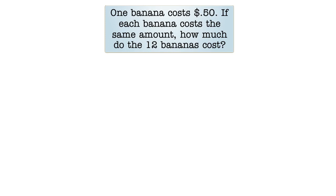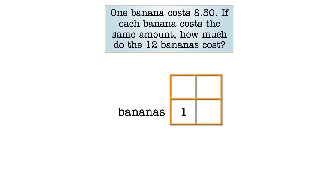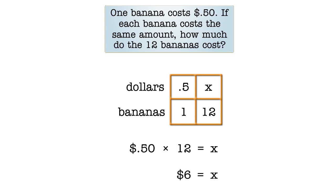Here's an example of the first type. One banana costs 50 cents. If each banana costs the same amount, how much do 12 bananas cost? We've used a multiplication number family to solve problems like these. We know that each banana costs 50 cents, so we enter dollars and .5, which represents 50 cents. We want to know the price of 12 bananas, so we enter 12. We enter an X for the price of 12 bananas, since that's what we want to find. Next, we write a multiplication equation and solve for X. And we find that 12 bananas cost $6.